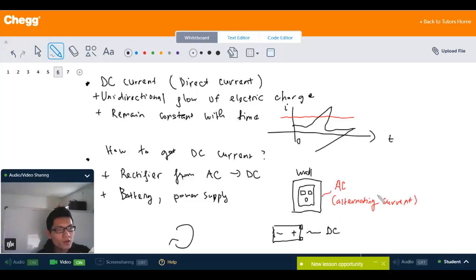The socket is generating the AC current all the time from our electric company, and you have to use the rectifier to convert that to DC if you want to use it for all types of electronic devices. Otherwise, you can also use the battery or the power supply. Battery always generates the DC current.